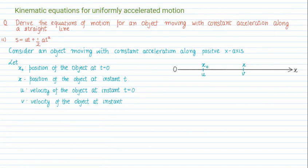Consider an object moving along the positive x-axis. At time t equals 0, the object is at position x₀ and moving with initial velocity u. The object moves and at a later time t, the position of the object is given by x and its final velocity is given by v. In this time interval 0 to t, the object has covered a displacement s.